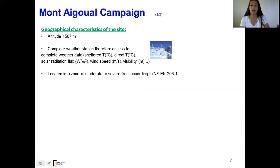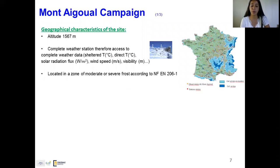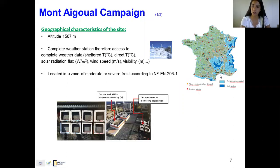In order to answer this question, a campaign was held at Mont-Égual in France. Why Mont-Égual? Because of its geographical characteristics: it has a high altitude, there is a complete weather station providing access to full weather data, and it is located in a zone of moderate to severe frost according to NF EN 206-1. Here is the French map where the Mont-Égual station is shown in yellow in a severe to moderate frost zone.